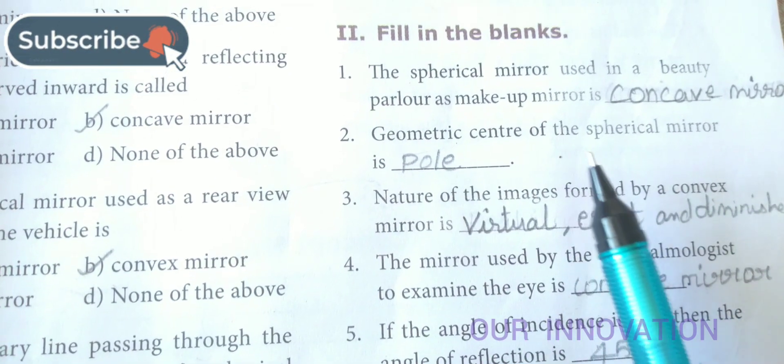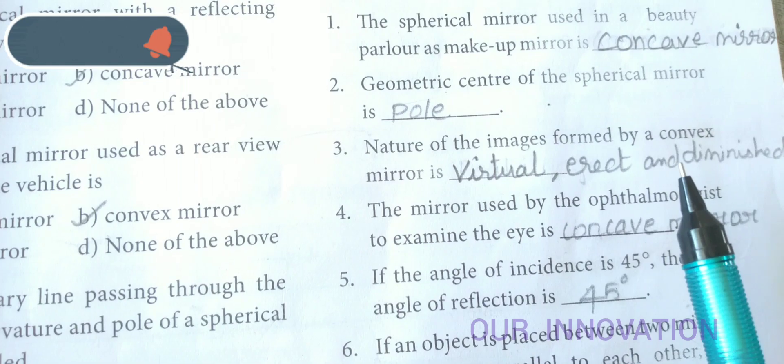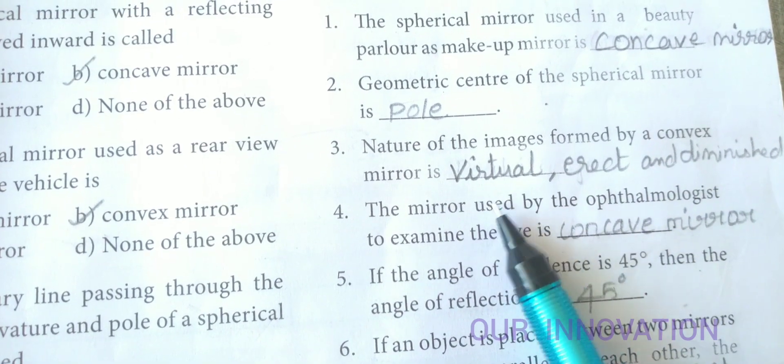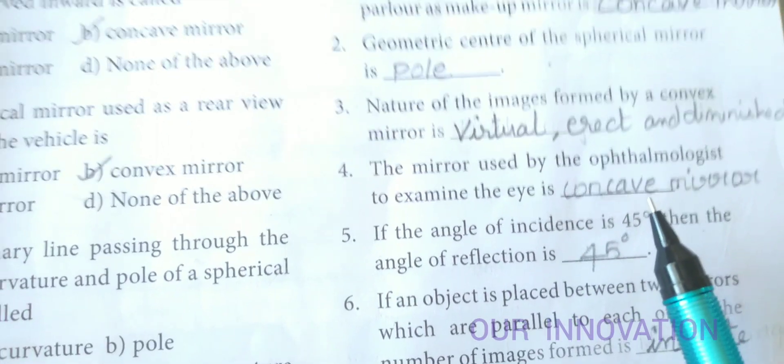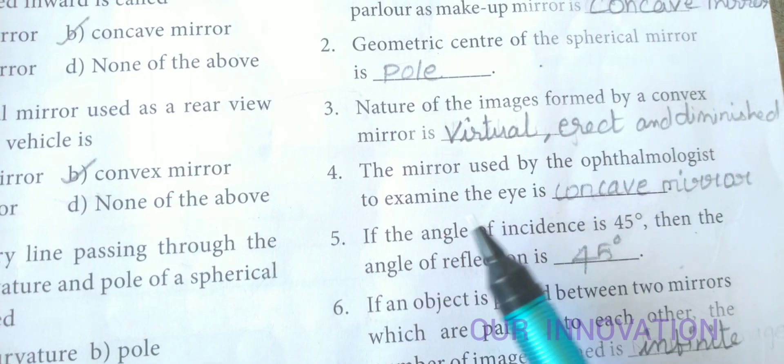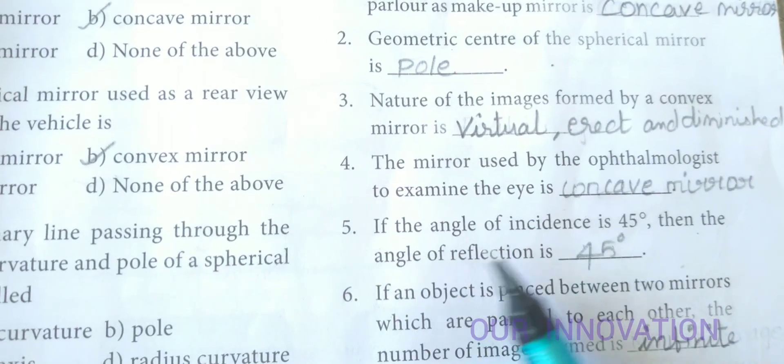Geometric center of the spherical mirror is pole. Nature of the images formed by a convex mirror is virtual, erect and diminished. The mirror used by the ophthalmologist to examine the eye is concave mirror.